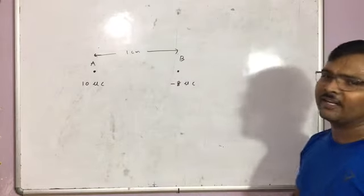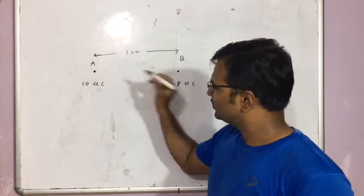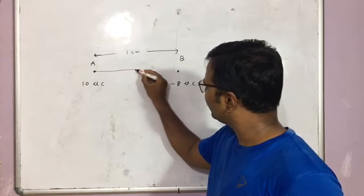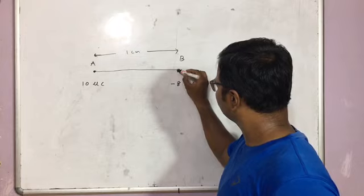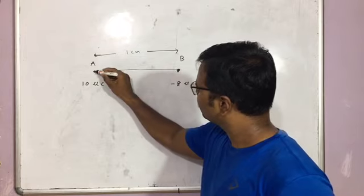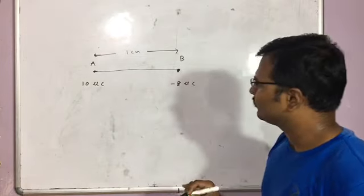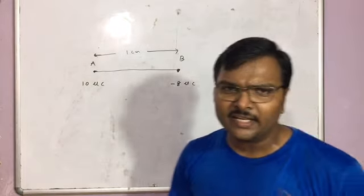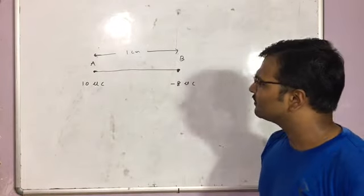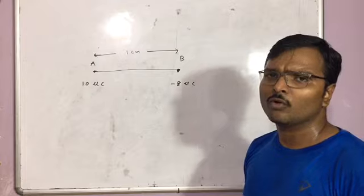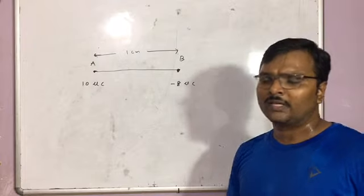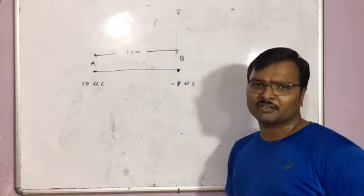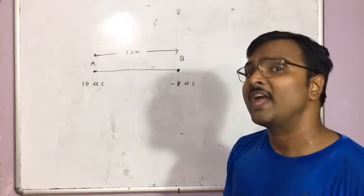How can we locate that point? You join the two charges. I'll reason logically about exactly which co-point the electric field strength is 0. I am taking 3 different possible points and reasoning through them.